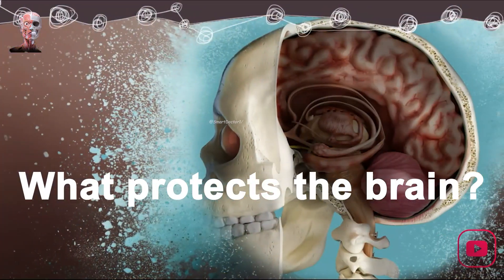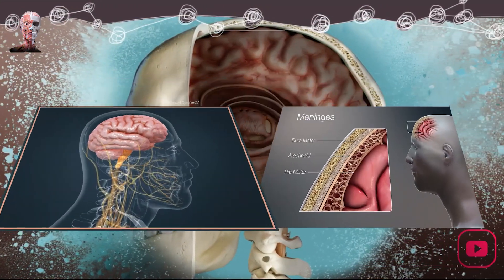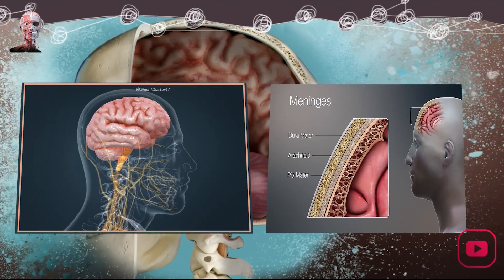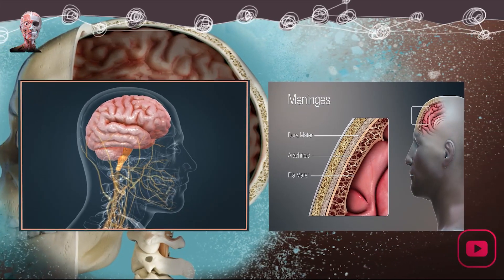What protects the brain? The brain is located in the cranial cavity. Besides the bones of the skull, it is protected by three membrane layers called the meninges.